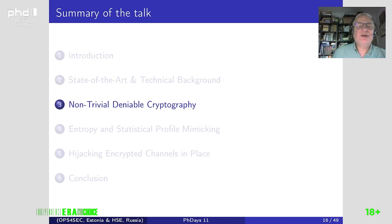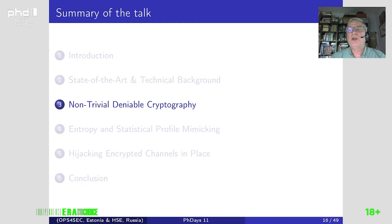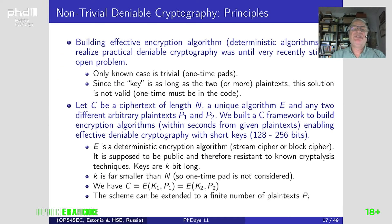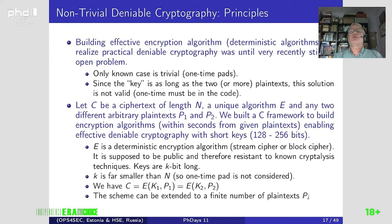Let us now consider non-trivial deniable cryptography. It is important because most attacks will be performed by means of malware, and there is a risk that the malware can be analyzed and reveal the secret of the attack. Deniable cryptography consists in producing two different plaintexts from a single ciphertext using two different keys.